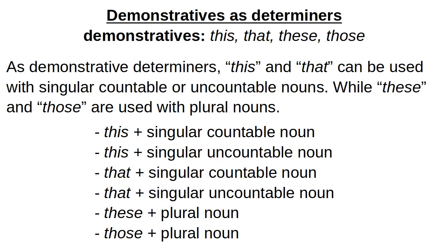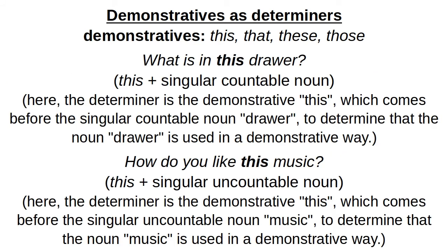Demonstratives are: this, that, these, those. 'This' can be used with a singular countable noun and a singular uncountable noun. 'That' can also be used with singular countable and uncountable nouns. 'These' and 'those' are used with plural nouns. For example, 'what is in this drawer?' Here 'this' comes before the noun 'drawer,' which is a countable noun, and it determines it is used in a demonstrative way — so it is a demonstrative determiner.